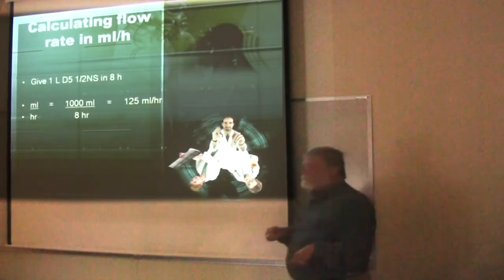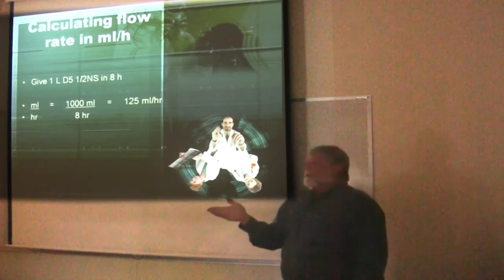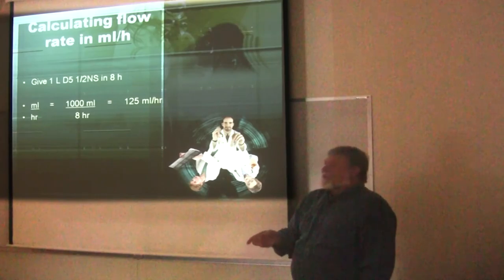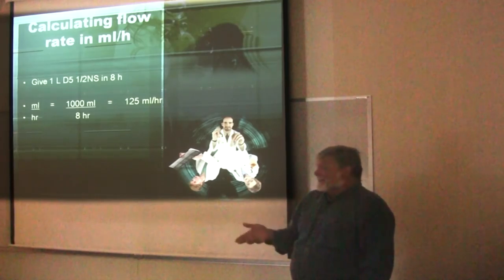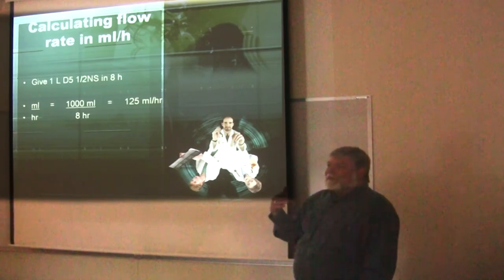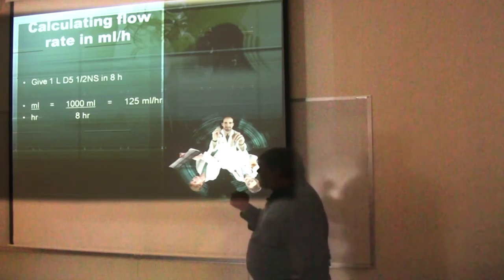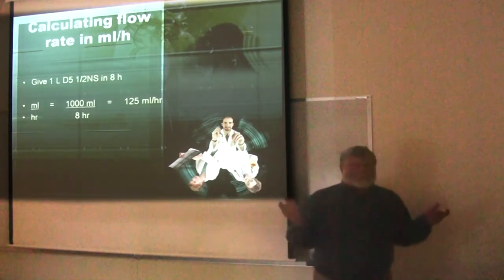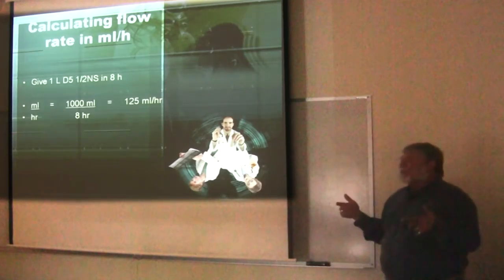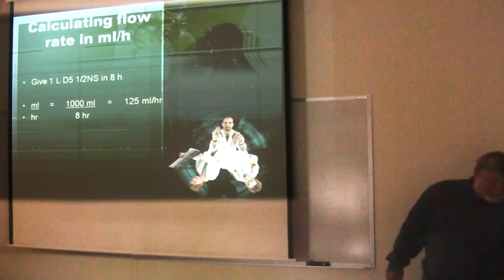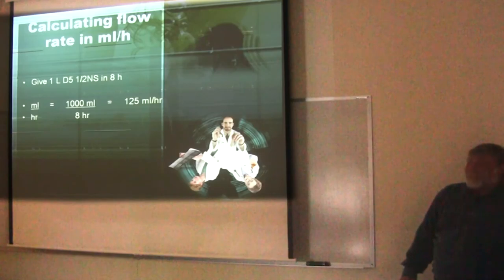The guy who's been drinking a quart a day for 20 years can tolerate that level — his system has accommodated — though everything else is trashed. You can't tolerate it; it'll kill you. When we talk about IV flow rates, it's always in milliliters per hour. The machines report how many mLs per hour they're delivering, even in the ICU.